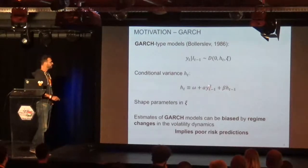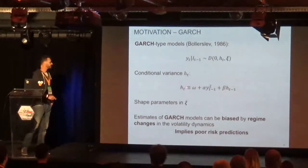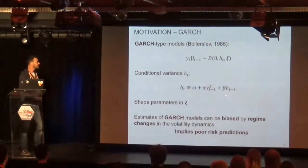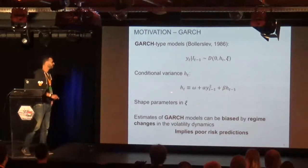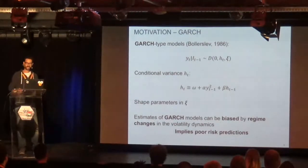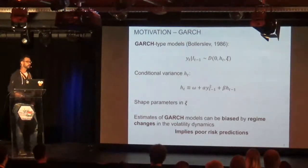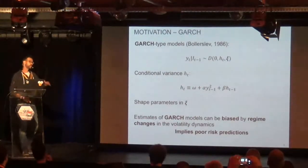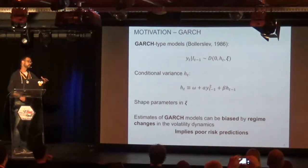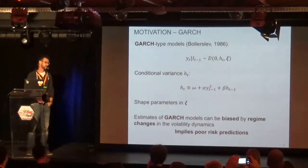So you have a constant. If you have a positive or negative shock in the past, this will impact the variance the next day. And if you are in a high level of volatility, it's likely to remain high. With this very simple framework you can really account for volatility clustering. It has been used a lot in finance. The problem with this model is that if you have a change in regime — a structural break — this leads to very poor risk forecasts.